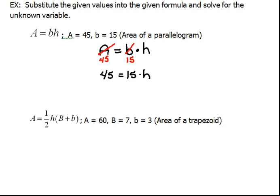We're going to have to undo what's going on with it right now. Right now H is being multiplied by 15, so the opposite of that would be to divide by 15. And remember, what you do to one side, you have to do to the other also to keep it balanced. The 15 now will cancel out on the right hand side. 15 over 15 is 1. We're left with 45 divided by 15 is 3 equals H. So our missing variable would be H, and we found that to be 3.